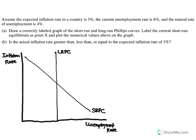Now we've got to put these values on the graph. There are four things we need to put on there: 3%, 6%, 4%, and point X. Starting with the natural rate of unemployment, which is at 4% — that goes where LRPC hits the horizontal axis at 4%. The current unemployment rate is 6%, which is greater than 4%, so it goes to the right of LRPC. That's our short run equilibrium, so we label that X.